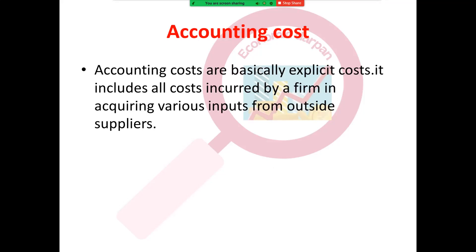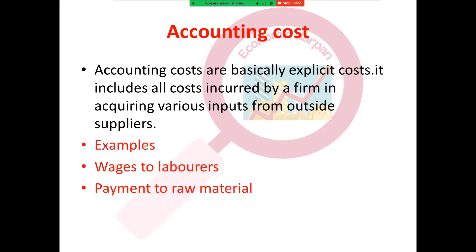Next is accounting cost. Accounting cost is basically the explicit cost — payments which we make to outsiders. When we pay outsiders, we maintain accounts, which is why they are called accounting cost. It includes all costs incurred by a firm in acquiring various inputs from outside suppliers. For example, wages to laborers and payment for raw materials.